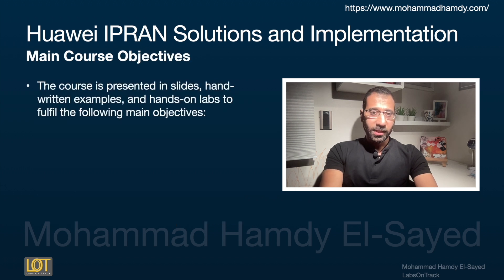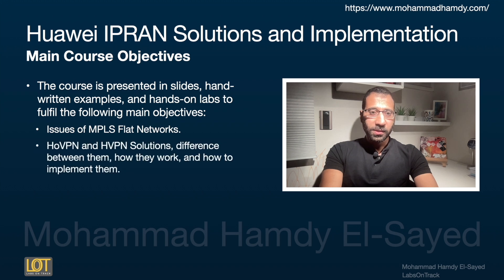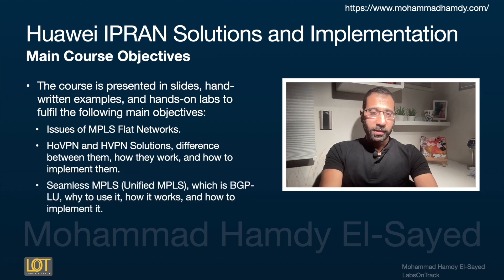The course is presented through slides, handwritten examples, and hands-on labs to fulfill the following main objectives: issues of MPLS flat networks; HO VPN and HVPN solutions, the difference between them, how they work, and how to implement them; and Seamless MPLS (also known as Unified MPLS), which is BGP labeled Unicast — why to use it, how it works, and how to implement it.